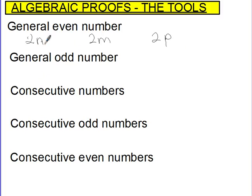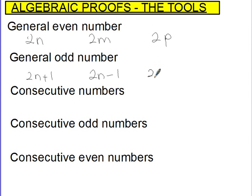Now if we have even numbers, we can use that to write down a general odd number. We could say that's an even number and if I add 1 onto it, it's definitely going to be an odd number. We could do 2n minus 1, because if that's an even number and we take 1 off it, it also generates an odd number. We could have different letters — these would all generate general odd numbers.